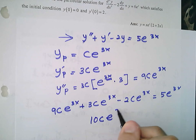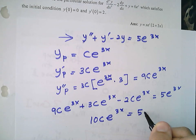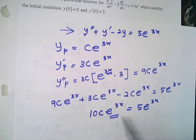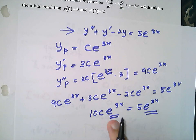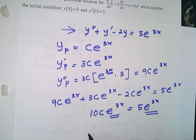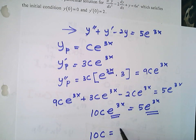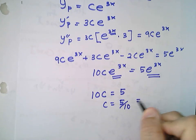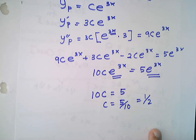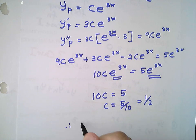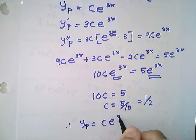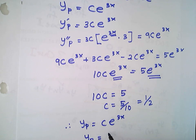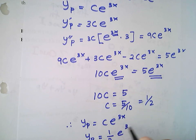So 10Ce^(3x) = 5e^(3x). Since these are the same function, we equate the coefficients: 10c = 5, therefore c = 5/10 = 1/2. So your yp = Ce^(3x) becomes yp = (1/2)e^(3x).